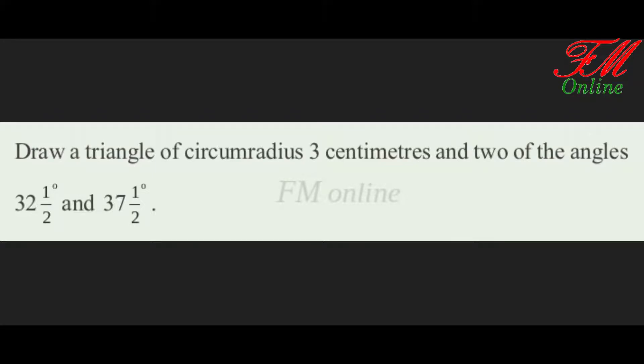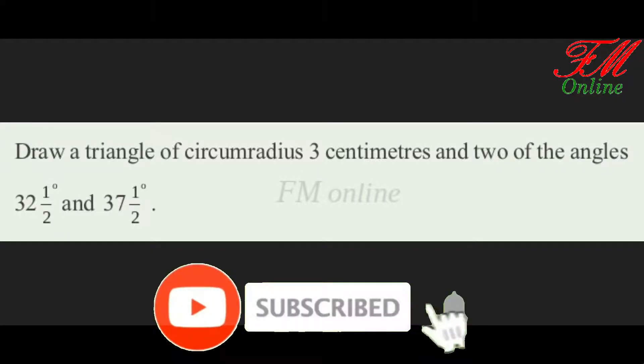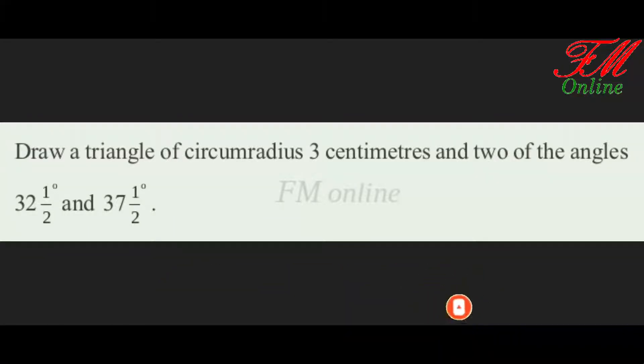Hello students, today we are going to discuss how to construct a triangle of circumradius 3 cm and two of the angles 32.5 degrees and 37.5 degrees.